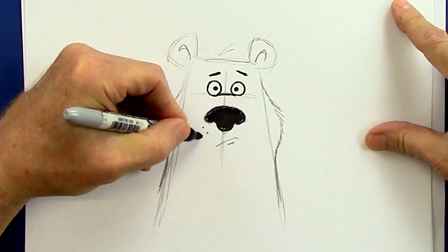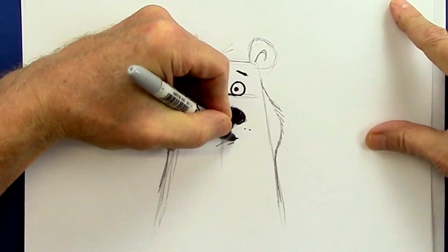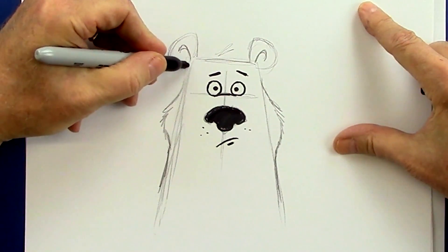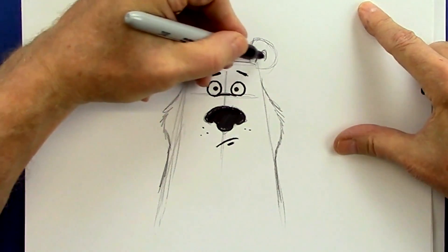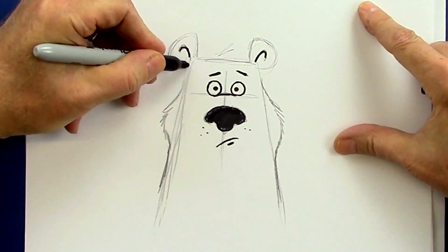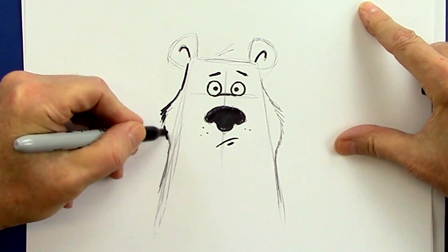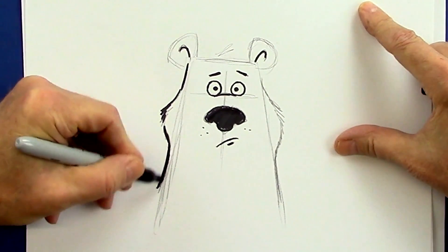And some whiskers on both sides. Now bring this line from inside the ears and bring that down here, the side of the head. And feather it out so it's kind of fat there and into a fat neck.